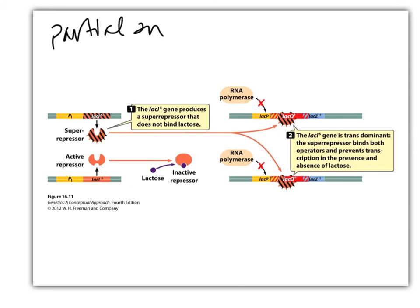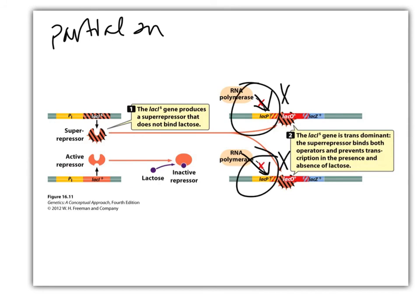Now consider a super repressor in a partial diploid. The super repressor can bind the operator no matter what — whether or not lactose is around, it still binds. So the super repressor binds both operators. RNA polymerase still binds the promoter, but it can't proceed through the operator. The result is no transcription.